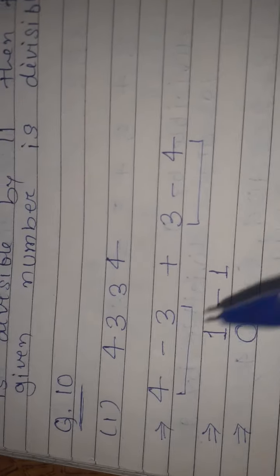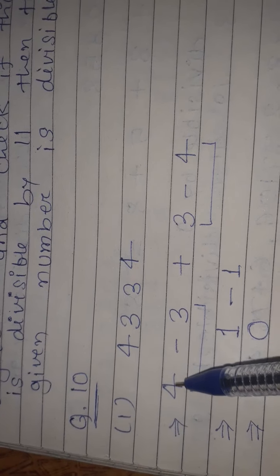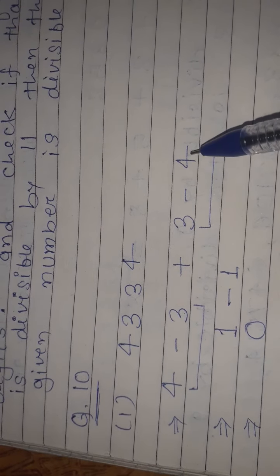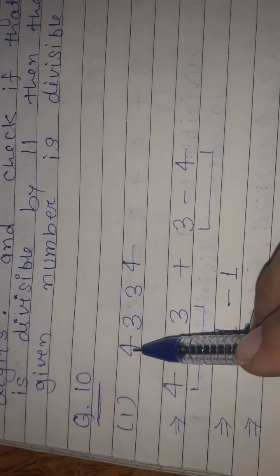Alternate sum is found this way: first number, subtract second number, plus third number, subtract next number. So we start from the first number.